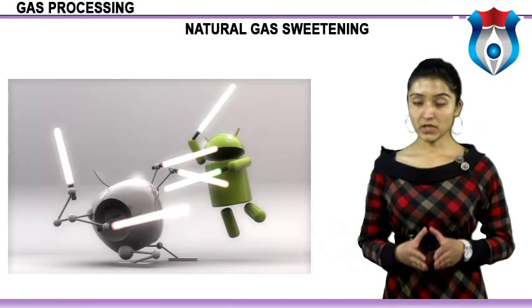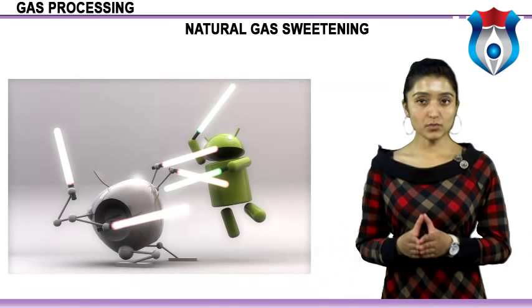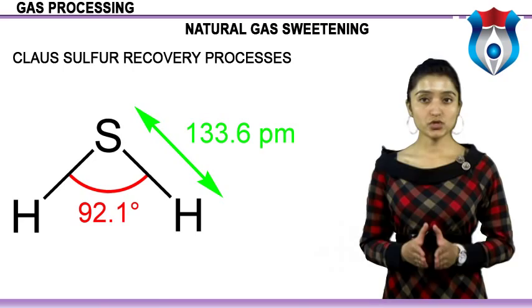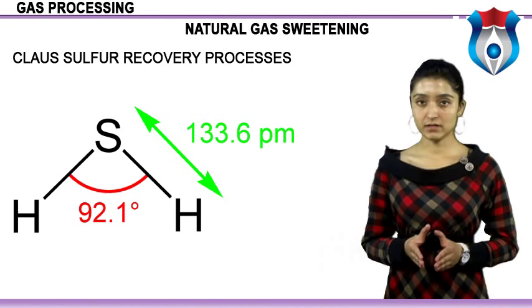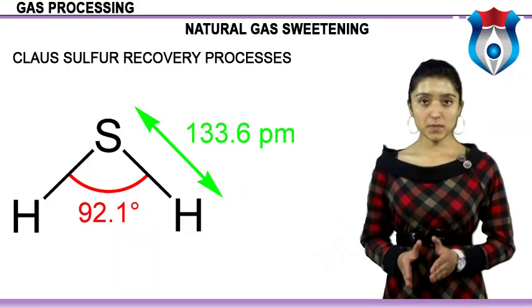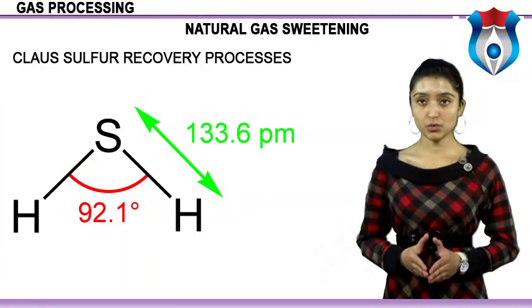Features of the Sulfinol process include low steam consumption and solvent circulation, low corrosion rate, selective removal of H2S in some applications, and smaller equipment due to low foaming tendency. Hydrogen sulfide H2S is a smelly, corrosive, highly toxic gas that also deactivates industrial catalysts. H2S is commonly found in natural gas and is converted to non-toxic and useful elemental sulfur at most locations that produce it.